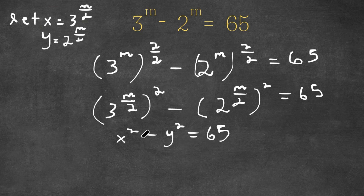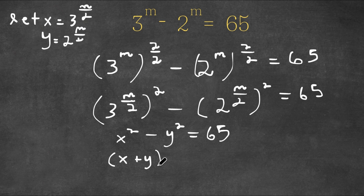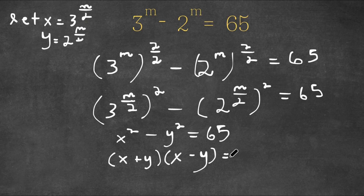Now if I have something in the form x squared minus y squared, I can write this as x plus y times x minus y. So I have x plus y times x minus y is equal to 65.